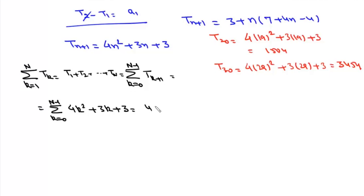So this is 4 times summation of k², which is n(n+1)(2n+1)/6, here we are dealing with (n-1)n(2n-1)/6, plus 3 times (n-1)n/2, plus 3n.